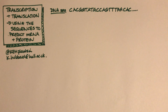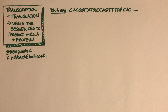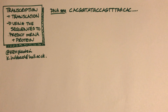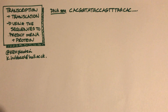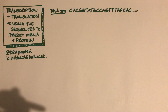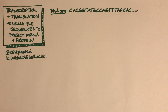In this video we're going to think about transcription and translation, but specifically how we can use genetic sequences to predict the sequence of an mRNA and a protein if we're given a DNA sequence. There are other videos on the mechanics of transcription and translation, but this is a guide to the sorts of problems you might encounter when going from a DNA sequence to an RNA sequence to a protein sequence.